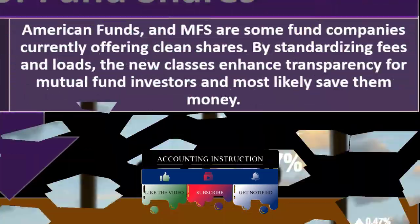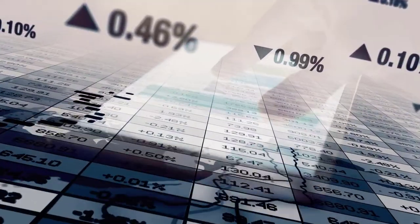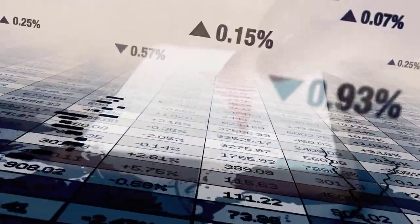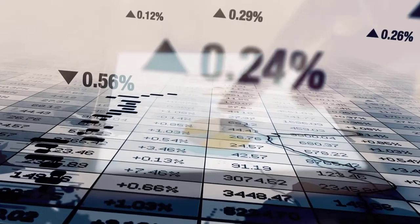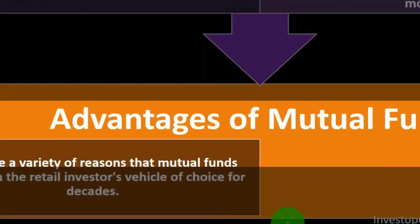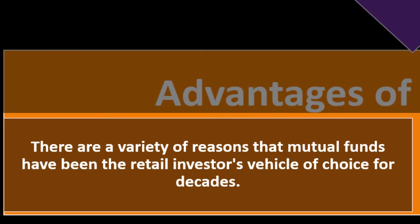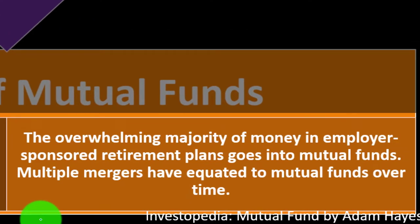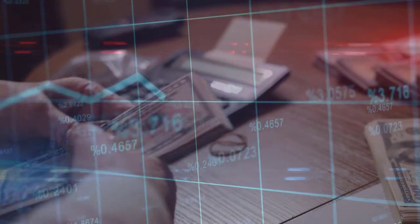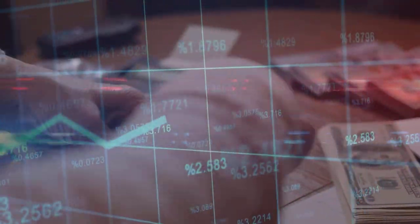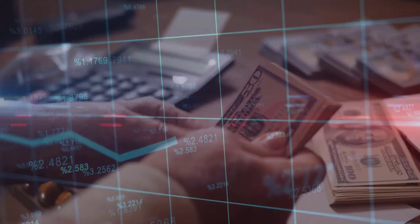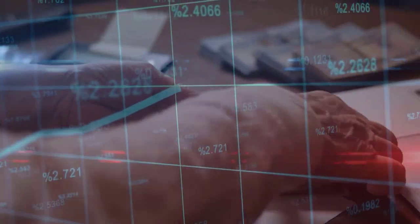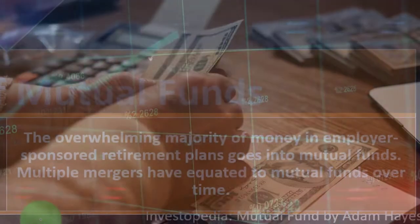When we're a typical investor, we'd like to see transparency and uniformity because that simplifies the investment decision. If companies are able to do that, they might draw in more money overall given that transparency and the trust built from it. There are a variety of reasons mutual funds have been the retail investor's vehicle of choice for decades. The overwhelming majority of money in employer-sponsored retirement plans goes into mutual funds — most people do this through their work with a 401k or 403b.